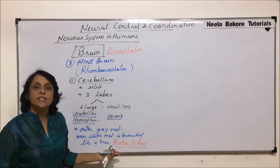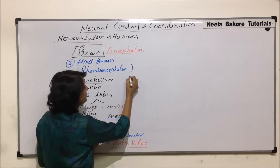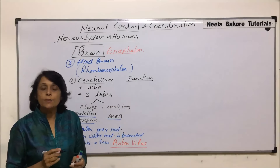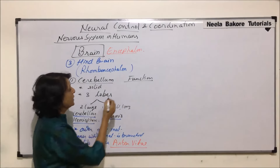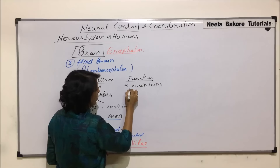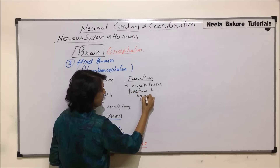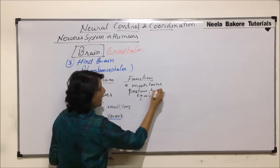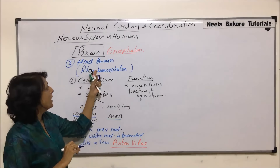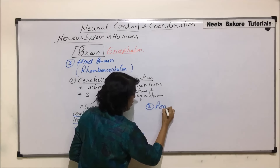The function of cerebellum is voluntary control of muscles, and it helps in maintaining posture and equilibrium.